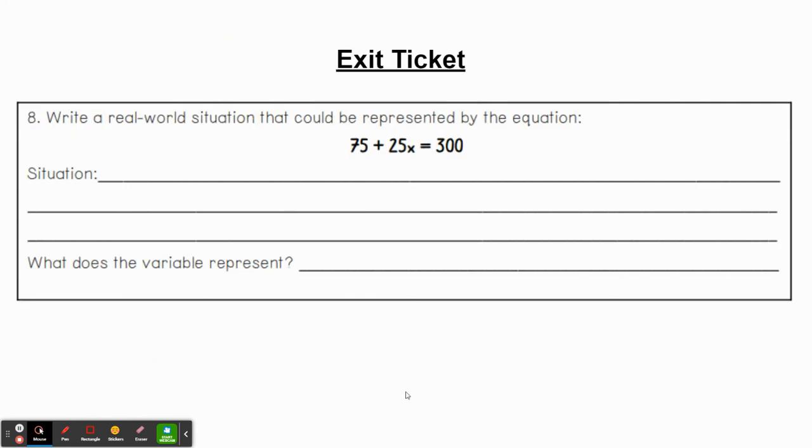Last one. Write a real world situation that could be represented by the equation 75 + 25x = 300. I want you to write a real world situation that could be represented by this. It could be shopping, video games, followers on social media, whatever you want to use. And then tell me what the variable represents. Should be fairly simple. I think you guys can do this. That does it for this video. See you next time.